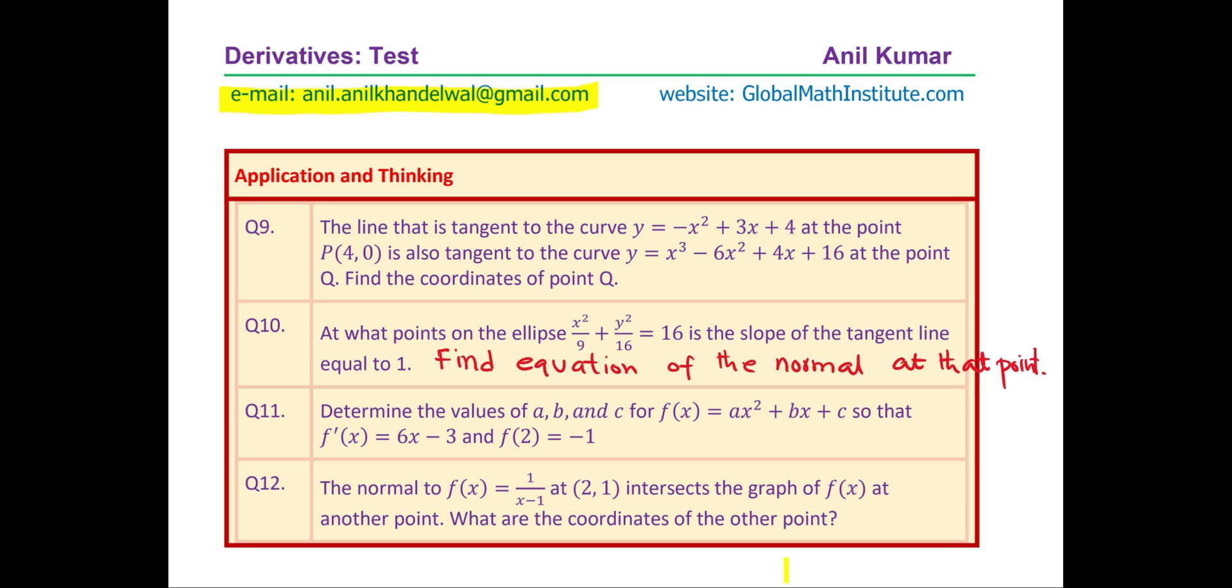Question twelve. The normal to f(x) equals 1 over x minus 1 at (2, 1) intersects the graph of f(x) at another point. What are the coordinates of the other point? Perfect. So that is a set of twelve questions which will give you a good idea of what a test paper would look like. I will now like you to pause the video and answer these questions. If you need help, you can always ask or contact me for the same.